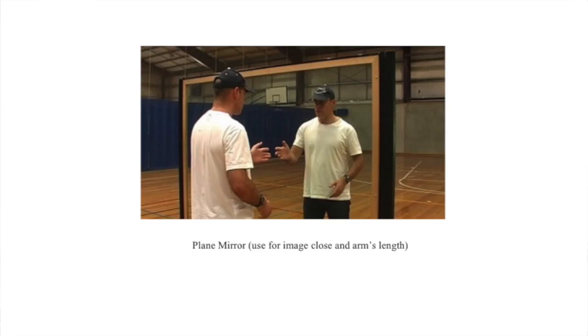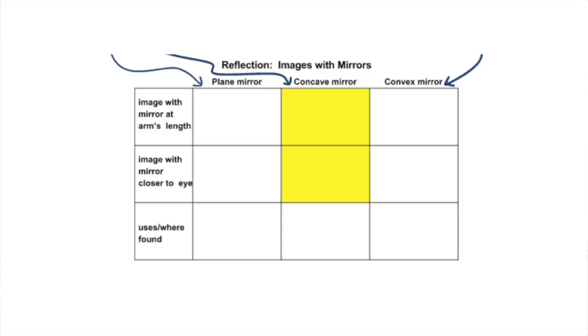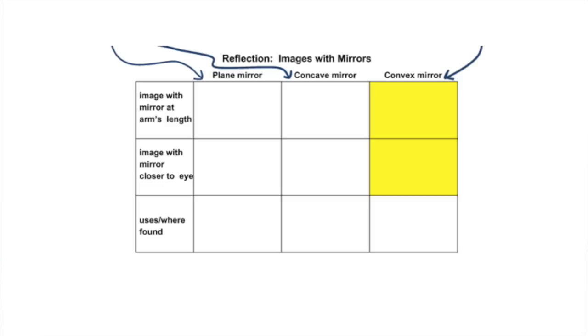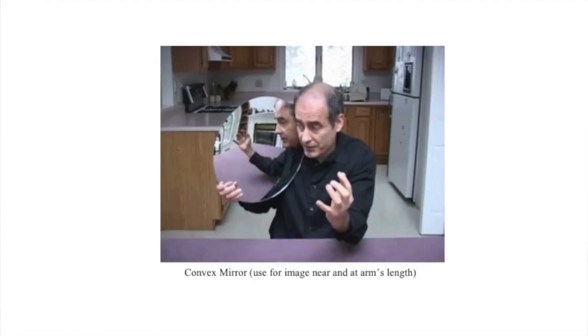This column is filled in as I show you the first image using the plain or flat mirror. This is the image in the plain mirror. Fill in this column as I show you the image in the concave mirror. Image in the concave mirror. Fill in this column as I show you the image with the convex mirror. Here is the image in the convex mirror.